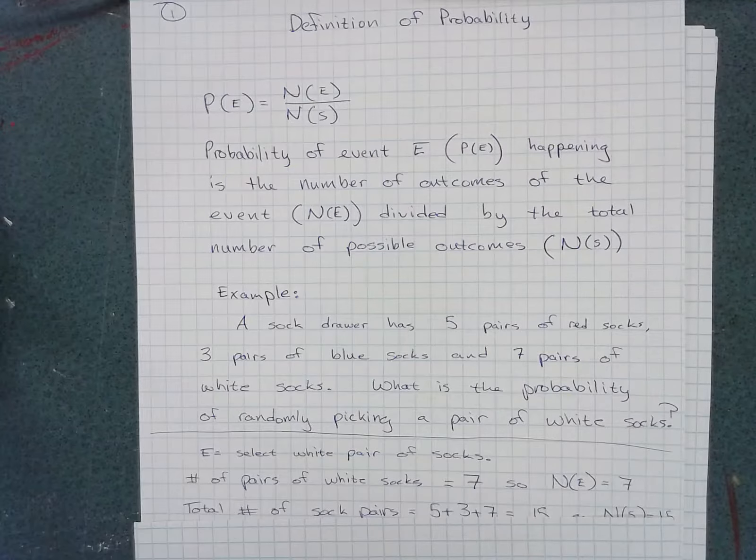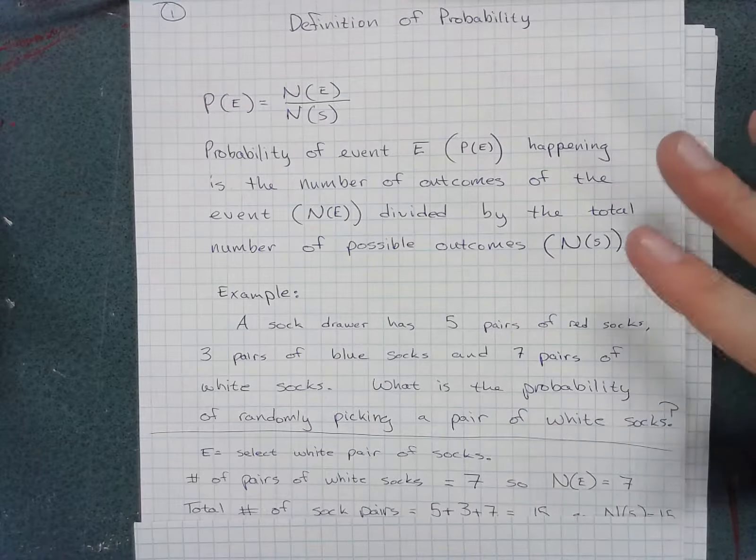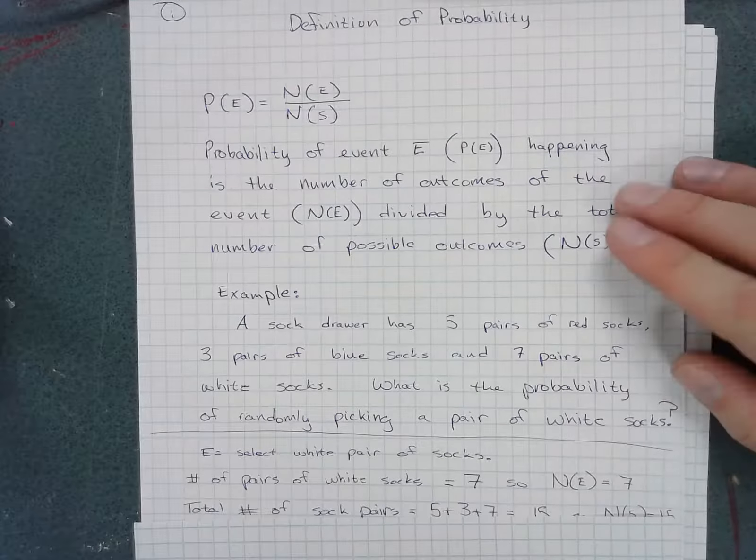three pairs of blue socks, and seven pairs of white socks. What is the probability of randomly picking a pair of white socks?